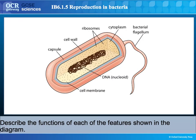This is a diagram of a typical bacterial cell. We have a cell membrane, which controls the movement of molecules into and out of the cell, and cytoplasm, a jelly-like substance where chemical reactions happen. We also have a cell wall — bacteria are not plants, but they do have cell walls made of peptidoglycan rather than cellulose. This provides the same function as in plants: keeping the cell's structure and preventing it from bursting.